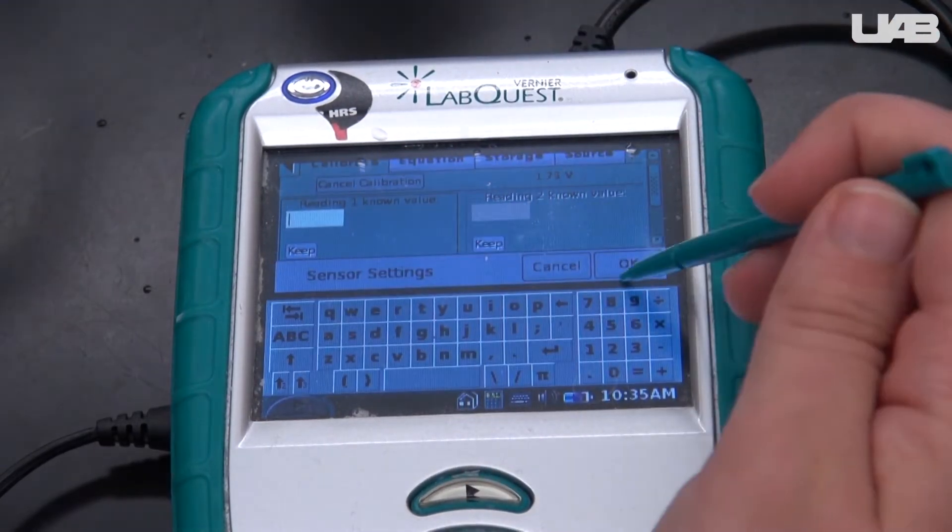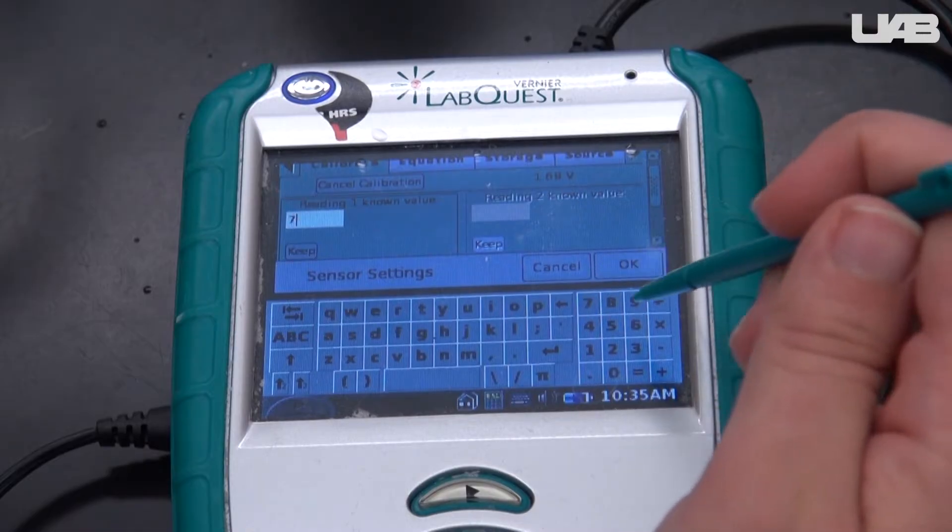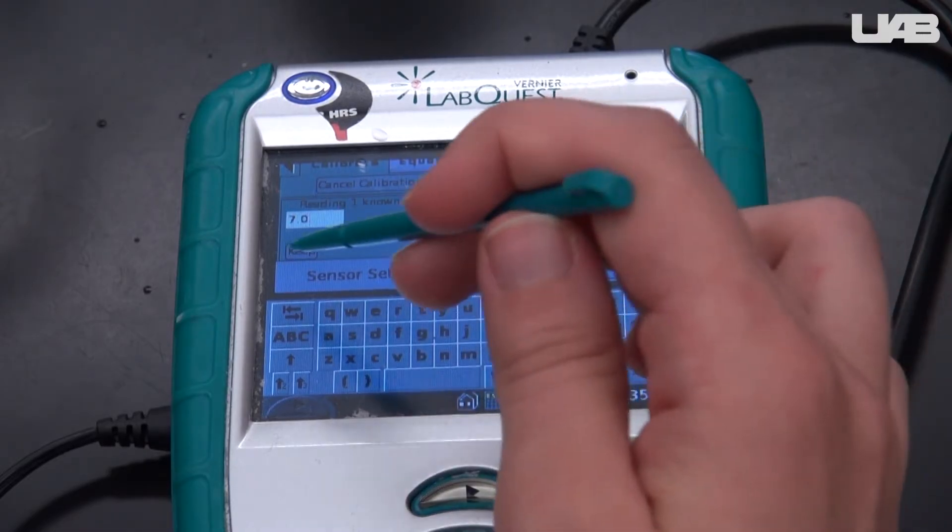You will wait for the voltage at the top to stabilize, then enter the pH of the buffer into the meter. Press Keep.